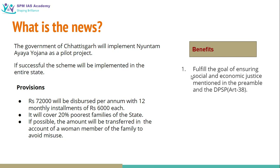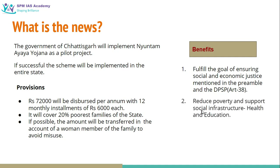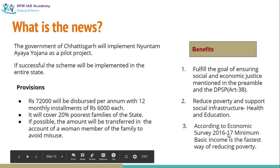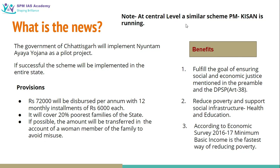If possible, the amount will be transferred to the account of a woman member of the family to avoid misuse of the fund. The possible benefits of this scheme are: it will fulfill the goals of the Constitution that ensure social and economic justice as mentioned in the Preamble as well as DPSP Article 38. It will reduce poverty and support social infrastructure like health and education in the state of Chhattisgarh. According to the Economic Survey 2016-17, minimum basic income is the fastest way of reducing poverty.